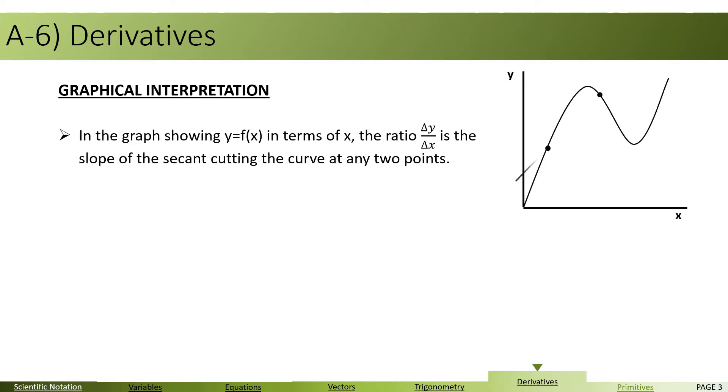If you have a graph showing y as function of x, joining any two points, the ratio delta y by delta x is nothing but the slope of the secant cutting the curve at two points of abscissas x1 and x2. So if you take y2 minus y1 over x2 minus x1, or delta y over delta x, you are simply calculating the slope of the secant.